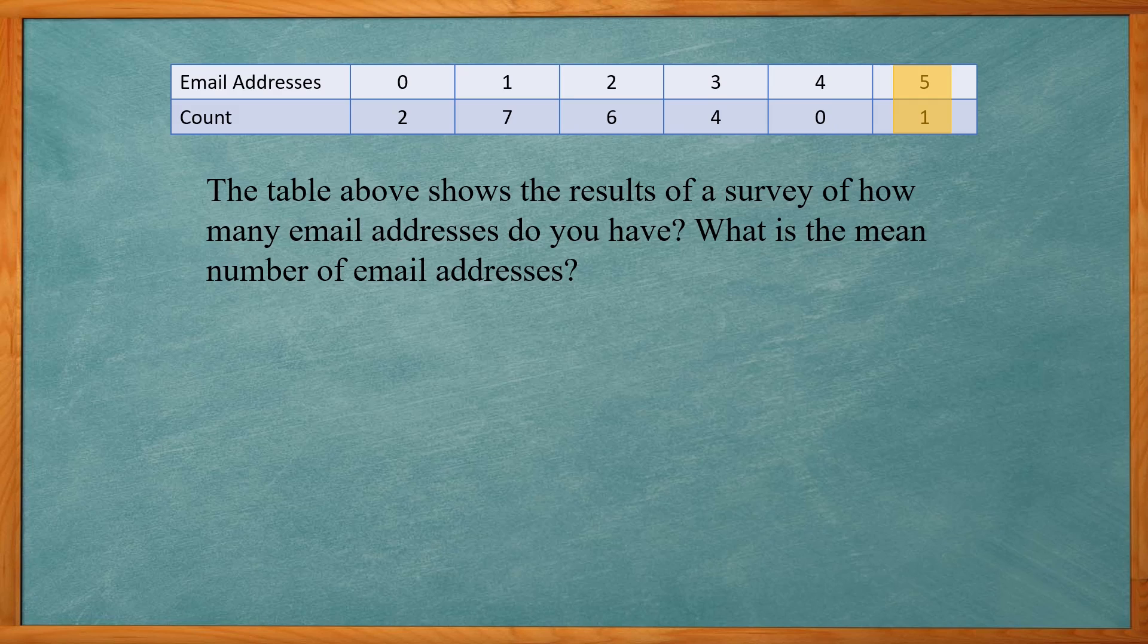And one had five email addresses. So what we actually have here is two people who had zero, seven people who had one, six people who had two.